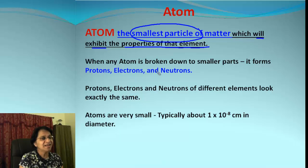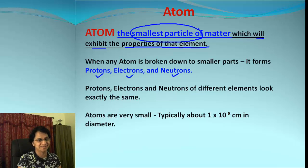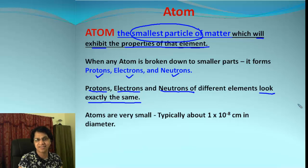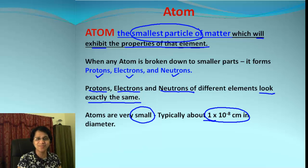When we break down an atom, we can form protons, electrons, and neutrons — these are called subatomic particles. One more thing we know is that all these subatomic particles from different elements will always look exactly the same. We also know atoms are extremely small, with a typical size of 1 × 10⁻⁸ centimeters.